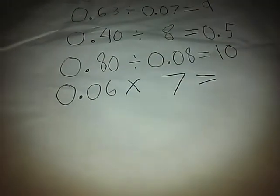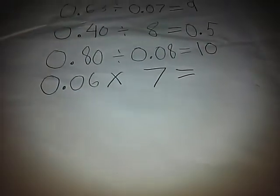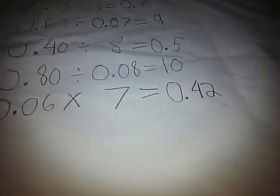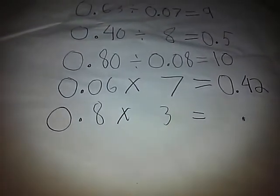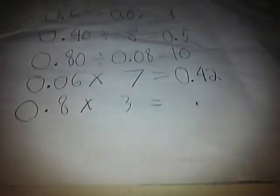0.6 times 7 equals 0.42! Since there's only one decimal, we need to make your number as a decimal. Correct!